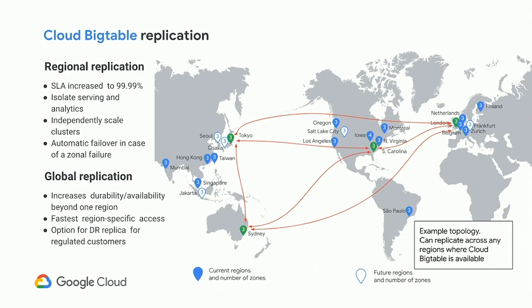Today we're announcing the GA of global replication. There are two main changes: it allows you to replicate between four zones, not two, and it completely removes the restriction on what region those zones are in. So you could put one on the East Coast and one on the West Coast, you could have a Japanese cluster with one in Osaka and one in Tokyo, and you can fan these out around the globe.